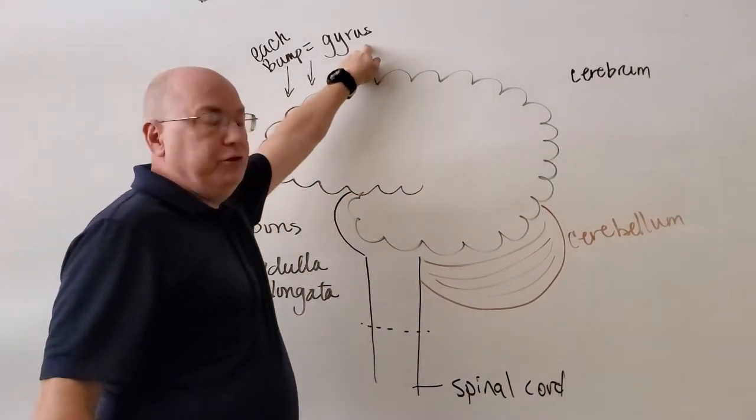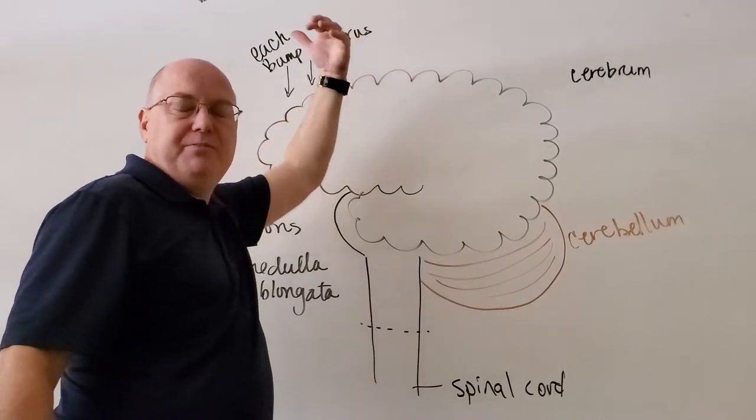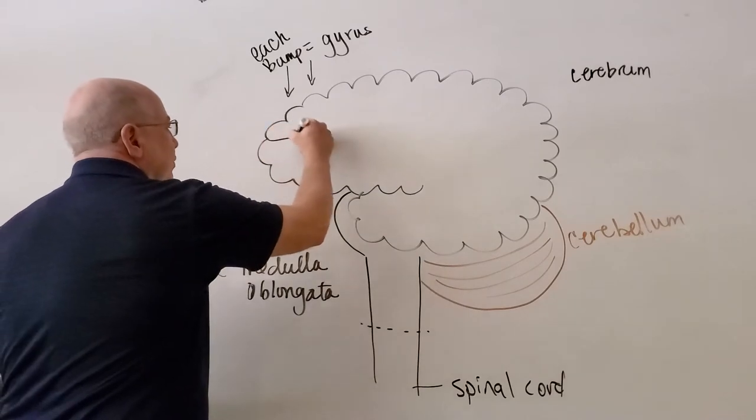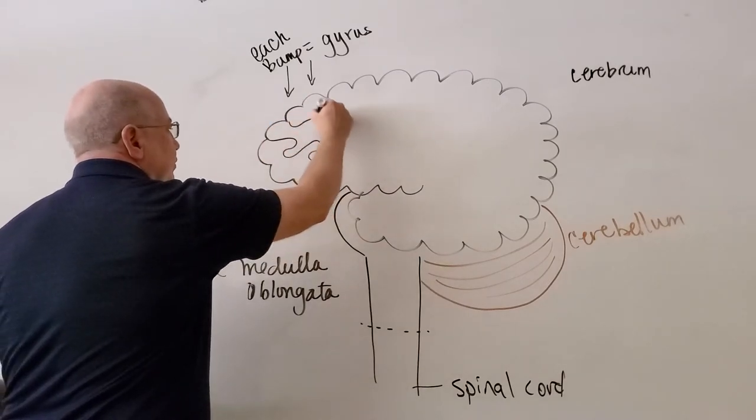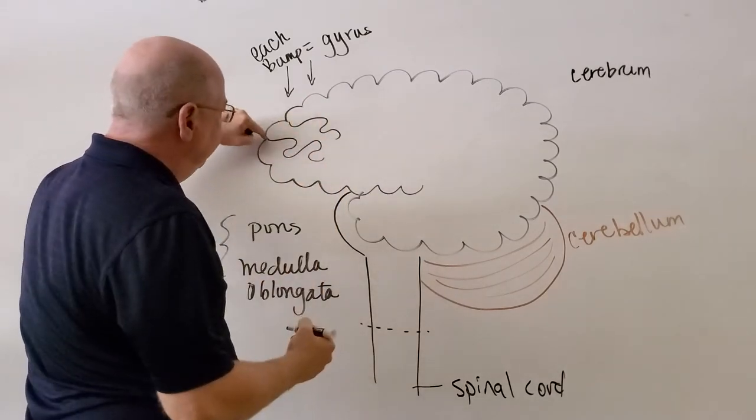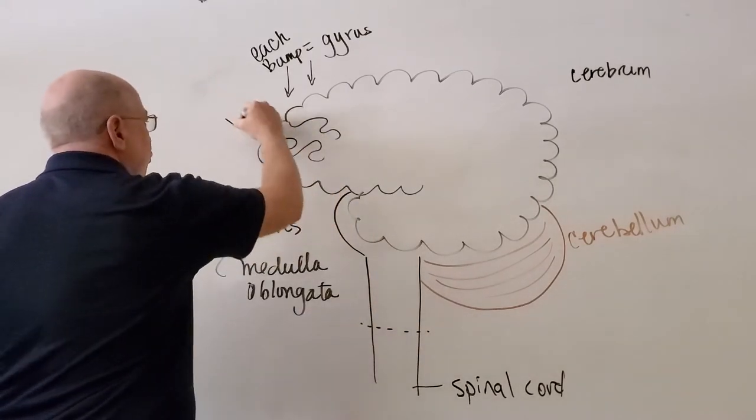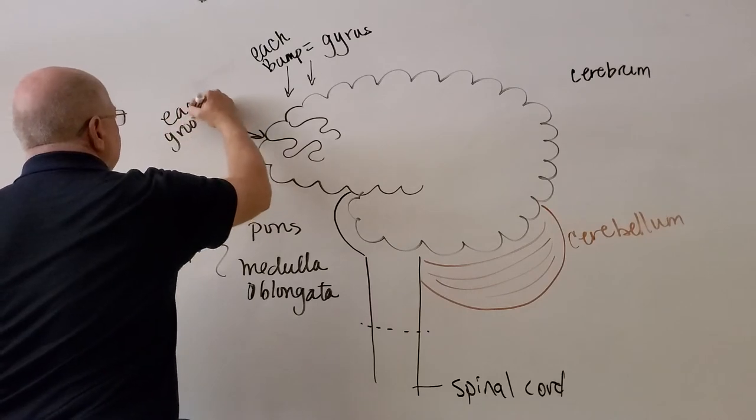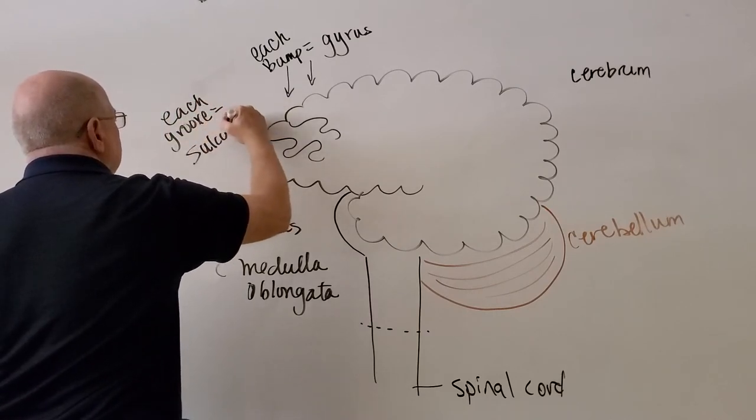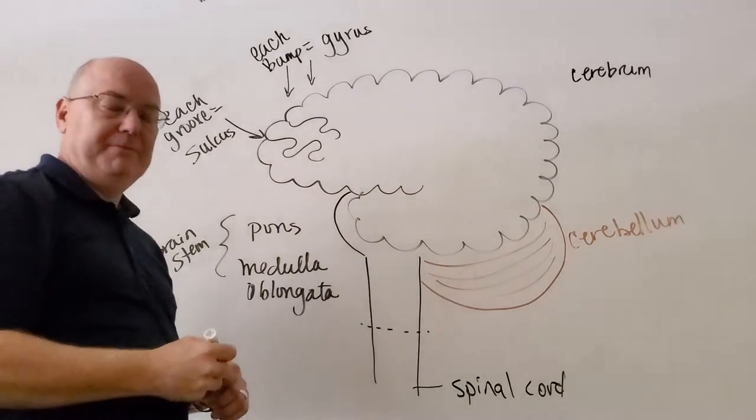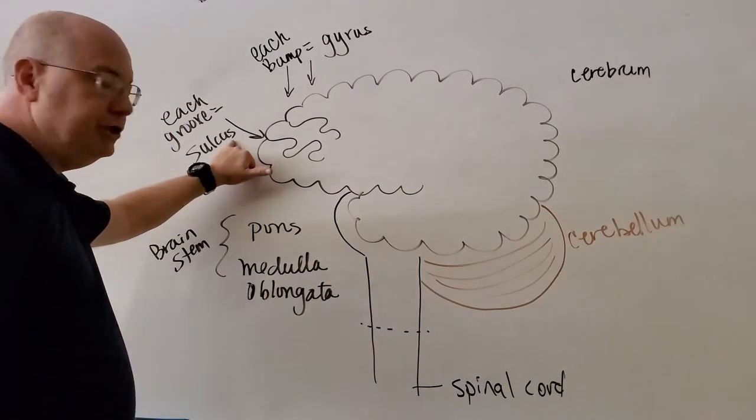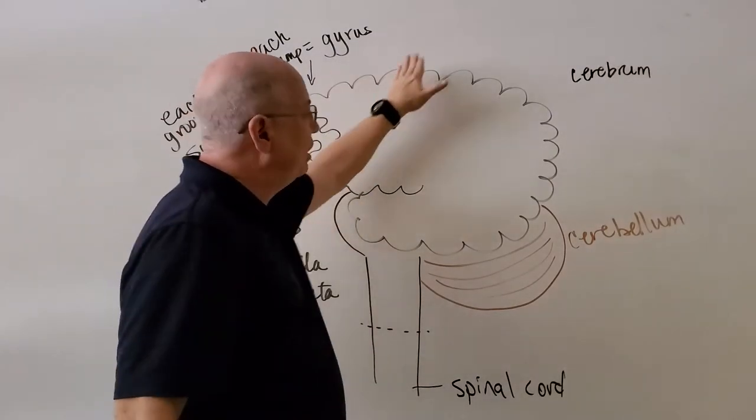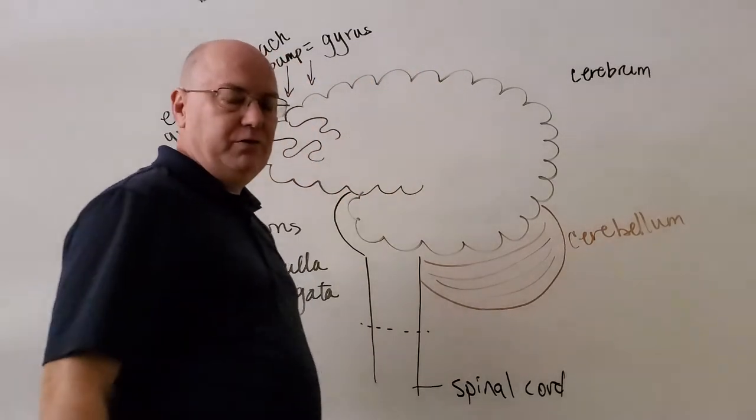And there are many gyri on the surface of the cerebrum. And to make this plural, we take the U.S. off and put an I there and pronounce it gyri. Now, in between two gyri, there are grooves that run around and snake around on the surface of the brain, kind of like a hill with a valley on either side. Those grooves, each groove on the surface of the brain is called a sulcus. A sulcus is a low spot. And we'll make this plural by taking the U.S. off and putting an I on there and say sulci. So the entire cerebrum is a series of gyri and sulci interrupting each other.